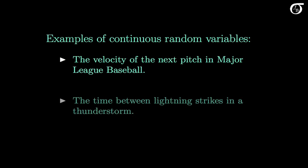Here are two examples of continuous random variables. The velocity of the next pitch thrown in Major League Baseball can be anything between 0 and whatever the maximum possible velocity is. The possible values are not just integer values like 83 miles per hour or 97 miles per hour, but everything in between — like 92.869439875 miles per hour. There is a continuum of possible values, and the velocity of the next pitch is a continuous random variable.